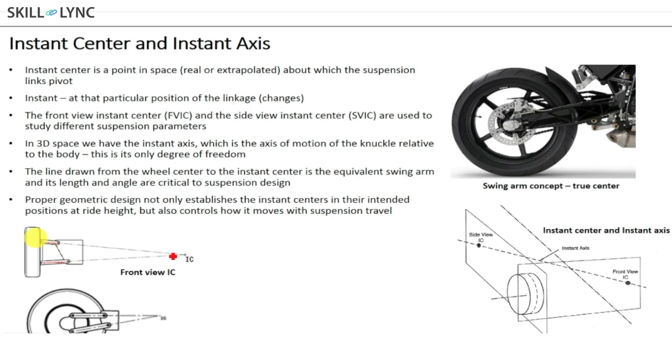The idea behind the instantaneous center is to extrapolate or create an axis and make sure they intersect at some point. This point, which can be an imaginary point, is what you call an instantaneous center.